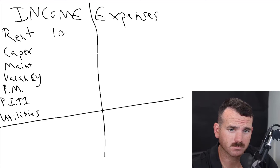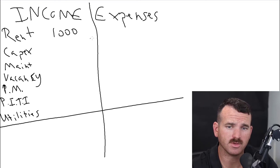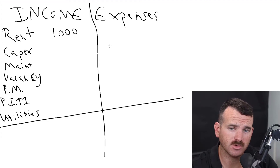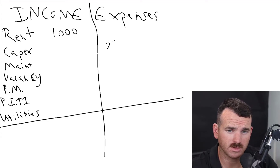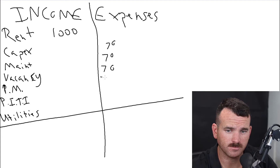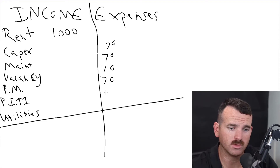Let's say you have a property and it makes $1,000 a month in rental income. And let's say you budget 7% for all of this — so that'd be $70 for CapEx, $70 for maintenance, $70 for vacancy, $70 for property management — and then your principal, interest, taxes, and insurance.